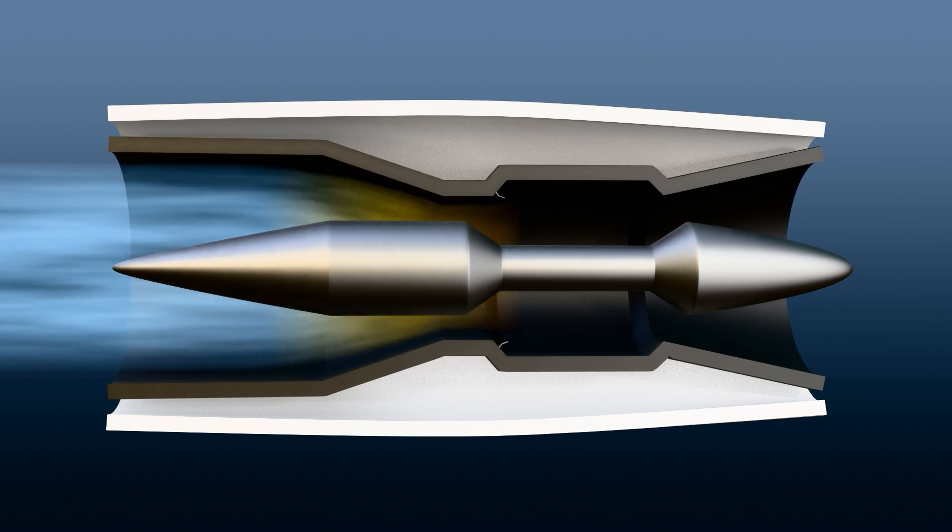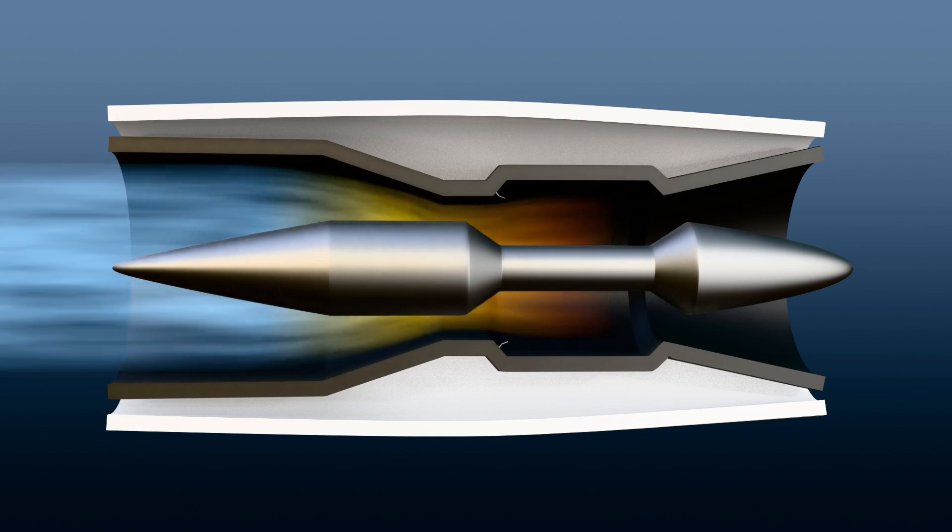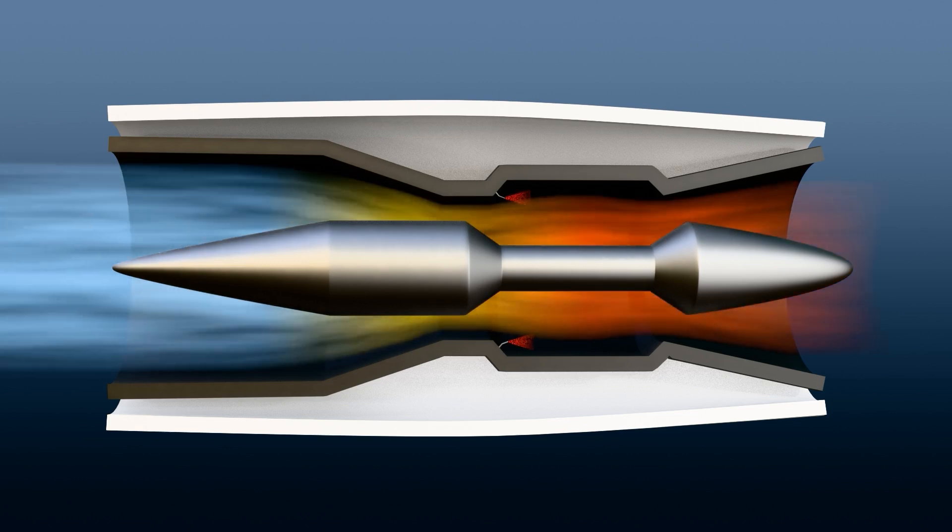The engine is designed to slow the incoming air to subsonic speeds, even when the aircraft is flying at supersonic speed. This slowing is essential for effective combustion, as the air needs to be at subsonic speeds for the combustion process to work properly. After the air is compressed, it enters the combustion chamber. Here, it mixes with the fuel and ignites, creating high-speed exhaust gases that generate thrust.